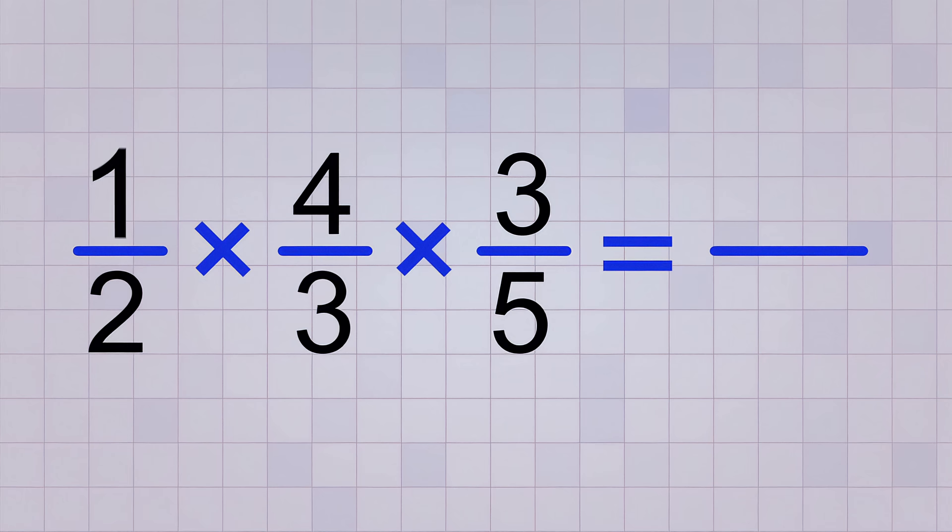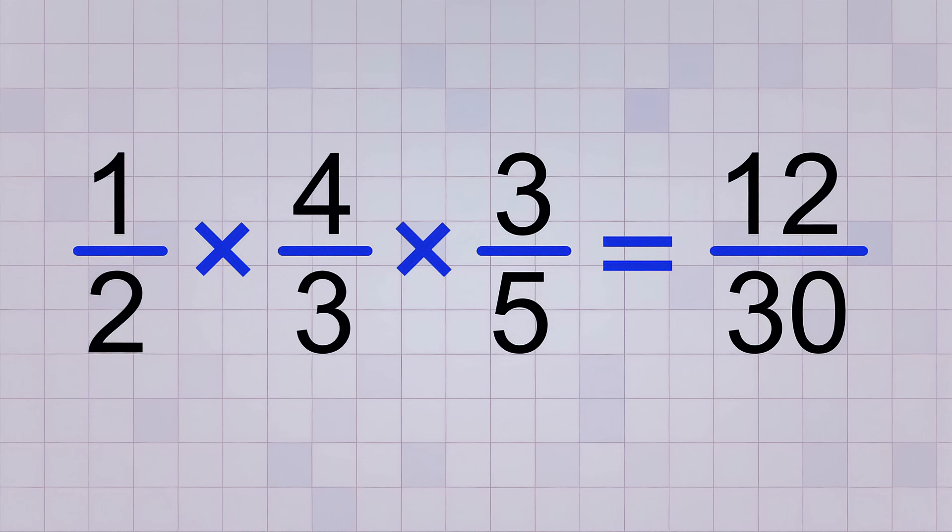So on the top, we have 1 times 4 is 4, and 4 times 3 is 12. And on the bottom, 2 times 3 is 6, and 6 times 5 is 30. That means our answer is 12 over 30.